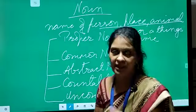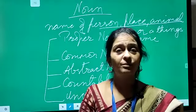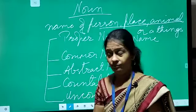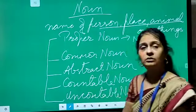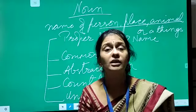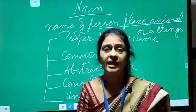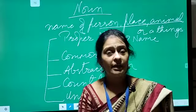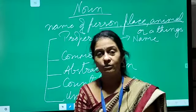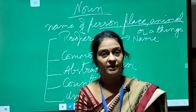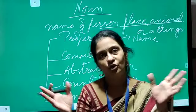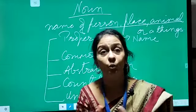Countable nouns are nouns which can be counted easily. Uncountable nouns are those things which we cannot count. Singular means when we are talking about one person, place, animal, or thing, and plural means when we are talking about more than one.